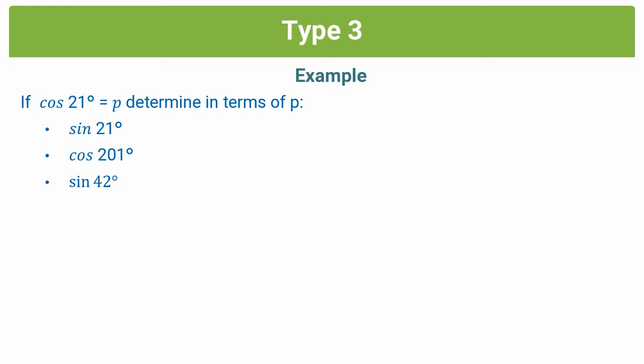Let's do an example on a type 3 question to see how they differ between grades 10, 11, and 12. We'll use: cos 21 degrees equals p, a trig equation in terms of the constant p. We are asked to determine three different trig expressions in terms of p: sine 21, cos 201, and sine 42.